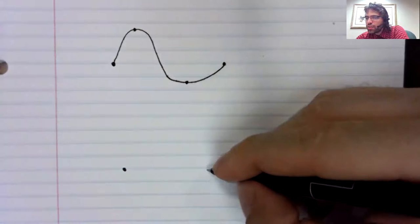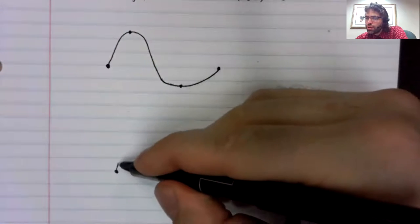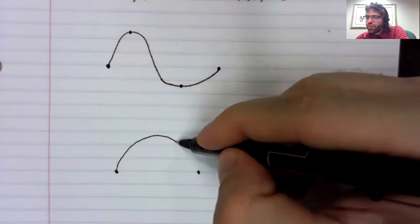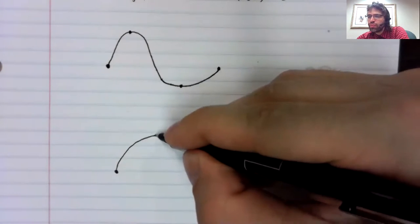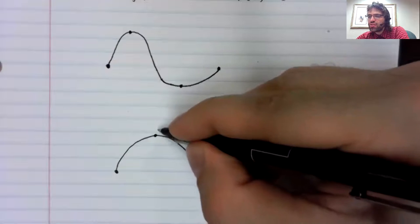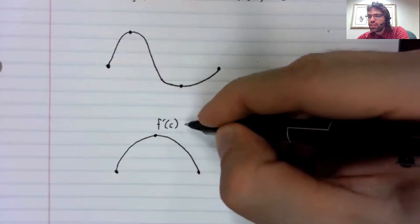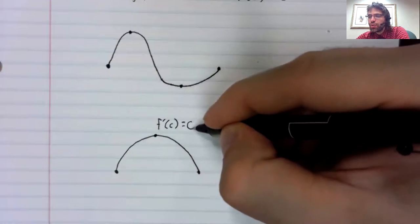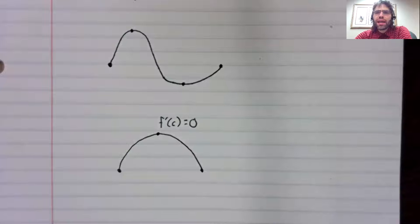We might only have one. If the function looks like that, for example, there's this single value of c, where the derivative is zero. But Rolle's theorem says there has to be at least one such point.